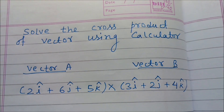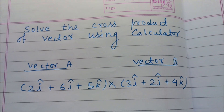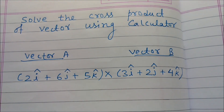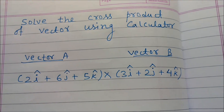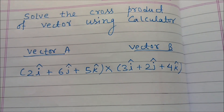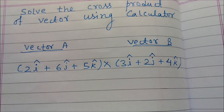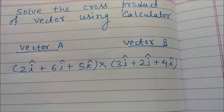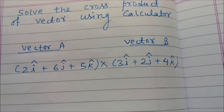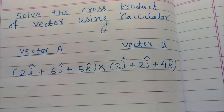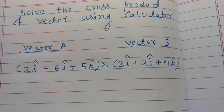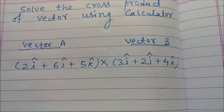Solve the cross product of vector using a calculator. Here, vector A and vector B. We have to do the cross product of these two vectors. Vector A equals 2i cap plus 6j cap plus 5k cap, and vector B is 3i cap plus 2j cap plus 4k cap. We have to do the cross product of both vector A and B.